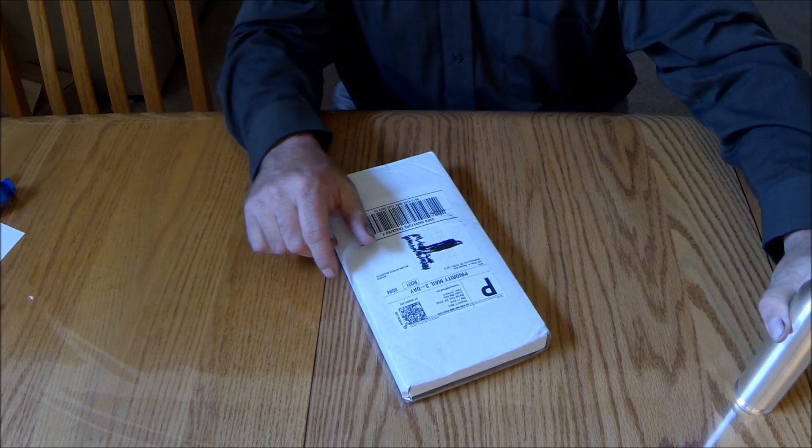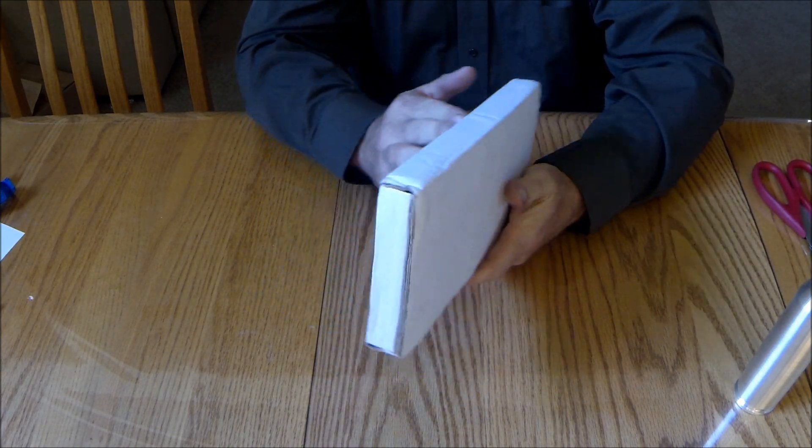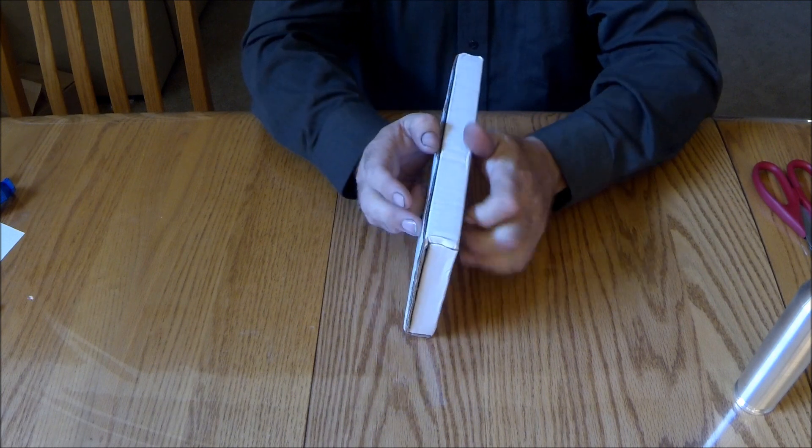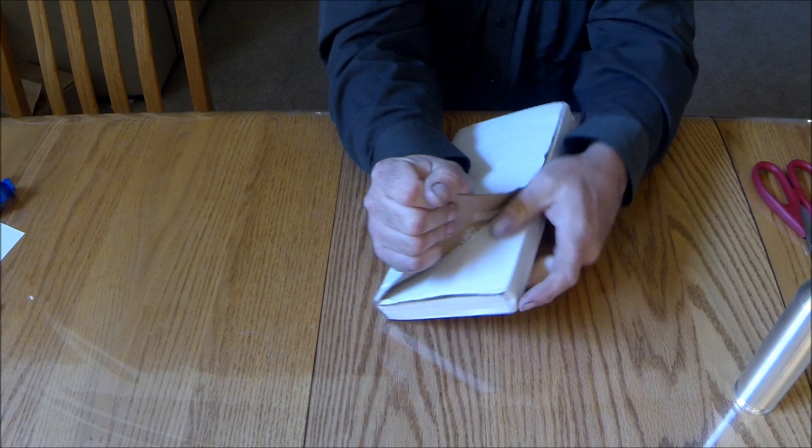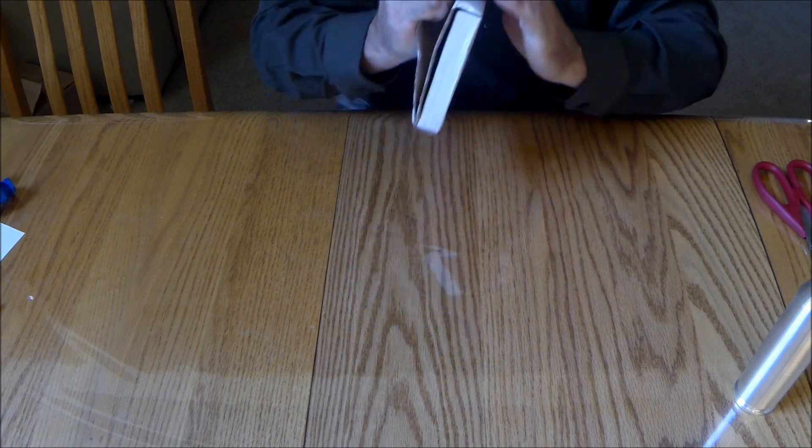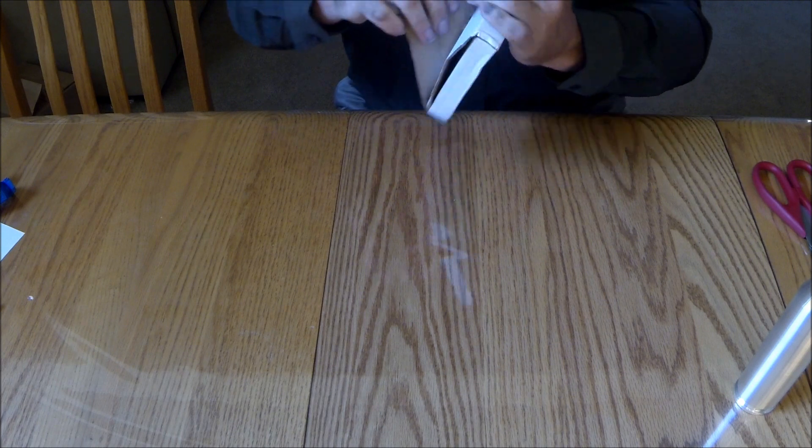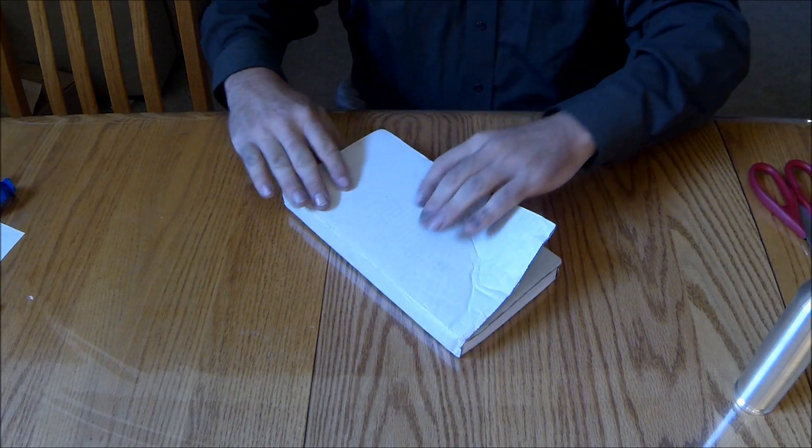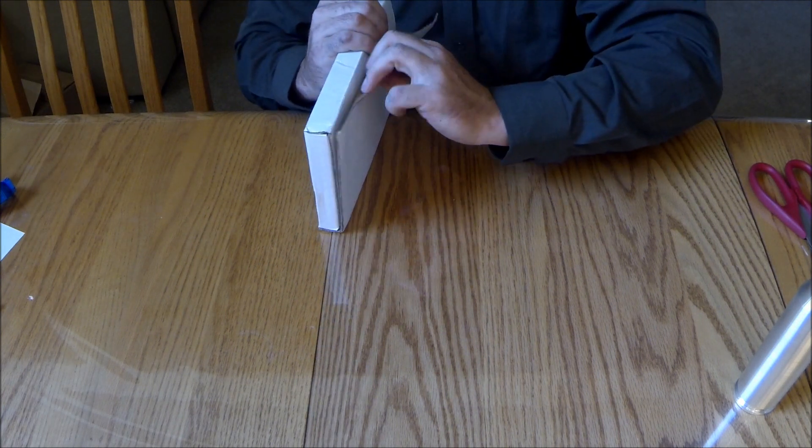I just got my order in from Apmex. This is a kilo of silver, the Tombstone Nugget. Silver just dropped like 73 cents yesterday, and I wish I would have waited a couple days. But oh well, it goes up, it goes down, it goes sideways.